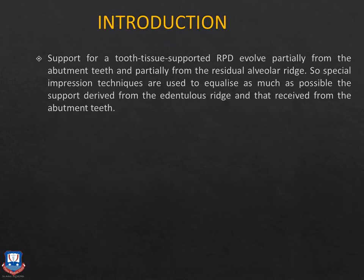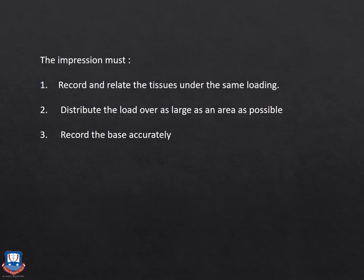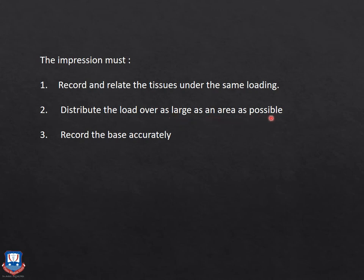Support for tooth-tissue supported RPDs evolves partially from the abutment teeth and partially from the residual alveolar ridge. Special impression techniques are used to equalize as much as possible the support derived from the edentulous ridge — tissue support — and that received from the abutment teeth — tooth support. The impression should record and relate the tissues under the same occlusal or functional loading pressure, distributed over a large area — the denture seat area — to maximize denture bearing coverage and prevent bone resorption and unnecessary loading.